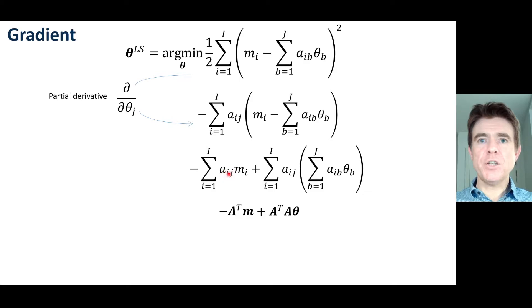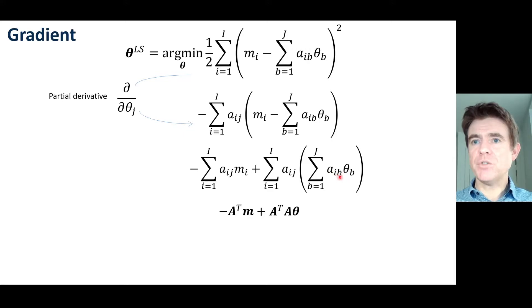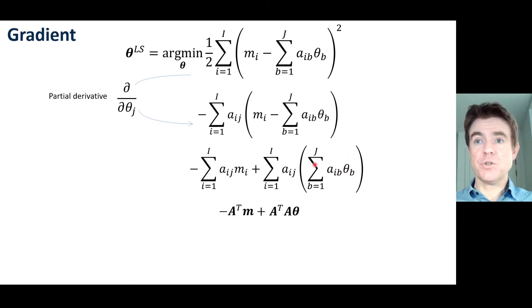The term a_ij m_i when summing over i corresponds to A transpose operating on m — you just swap the rows and columns of the matrix A and apply that to the vector m. To see this, recall that in regular matrix-vector multiplication we take each of the row vectors of matrix A and compute their scalar product with the vector theta: for row i we consider all elements across all columns for that fixed row i, and take those in product with all elements of the column vector theta. Whereas here we are doing that process down the columns rather than across the rows — that is why this is A transpose m.